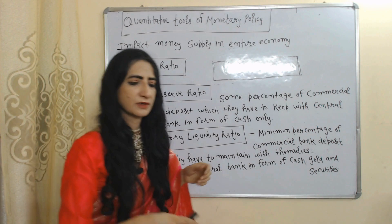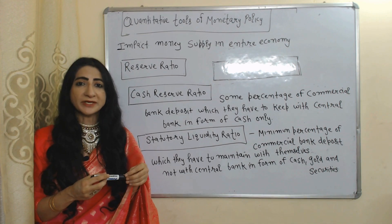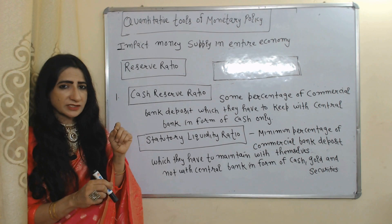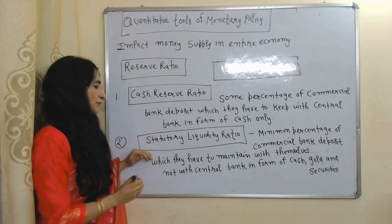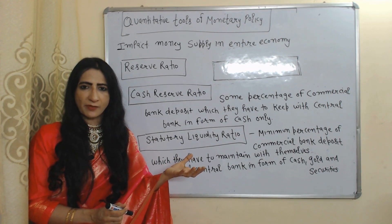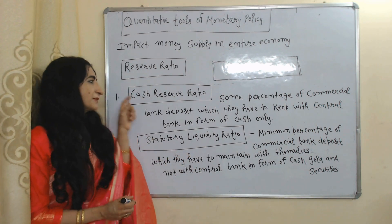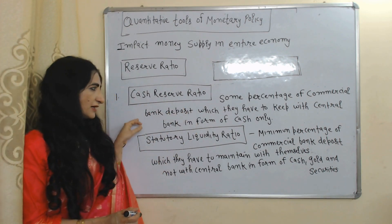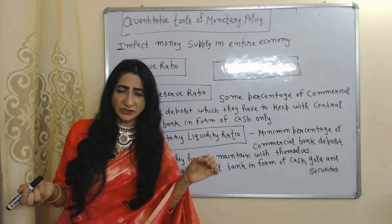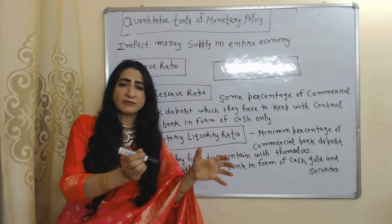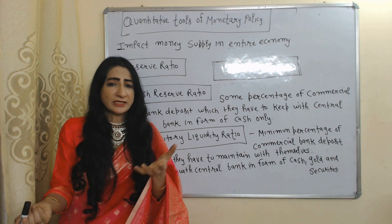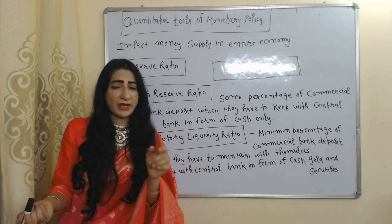Now we will see quantitative tools of monetary policy — quantitative tools impact money supply in the entire economy. The first quantitative tool is reserve ratio, mainly divided into two parts: Cash Reserve Ratio (CRR) and Statutory Liquidity Ratio (SLR). Cash Reserve Ratio means some percentage of commercial bank deposits which they have to keep with the central bank in the form of cash only. For example, if the total deposit of a commercial bank is one crore and they have to keep 10% with the central bank in cash, that is called Cash Reserve Ratio.